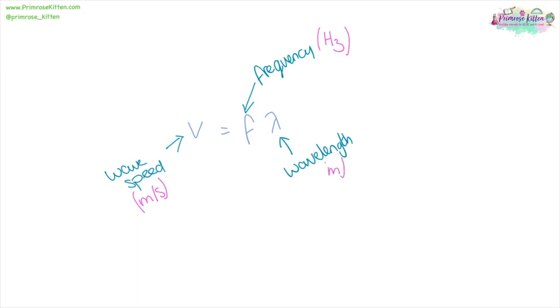To work out the speed of a wave, wave speed, we can take the frequency and times it by the wavelength. Our units of speed are in meters per second. Frequency is in hertz, capital H lowercase z, and wavelength is in meters.